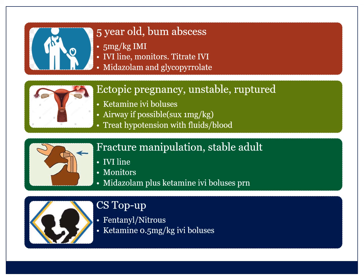For analgesia, remember you don't have to go straight to ketamine. You can use an opioid like fentanyl, nitrous oxide, paracetamol, and anti-inflammatories. Then what I do is take ketamine at half a milligram per kilogram boluses and repeat as necessary. Experienced anaesthetists are unlikely to use ketamine this early, but it is not a bad analgesic if you're inexperienced and isolated in a district hospital.